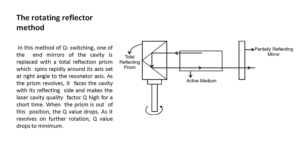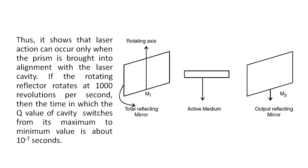The rotating reflector method: In this method of Q-switching, one of the end mirrors of the cavity is replaced with a total reflecting prism, which spins rapidly around its axis set at right angle to the resonator axis. As the prism revolves, it faces the cavity with its reflecting side and makes the laser cavity quality factor Q high for a short time. When the prism is out of this position, the Q value drops, and on further rotation, Q value drops to minimum. Thus, laser action can occur only when the prism is brought into alignment with the laser cavity. If the rotating reflector rotates at 1000 rpm, then the time in which the Q value of a cavity switches from its maximum to minimum value is about 10 raised to the minus 7 seconds.